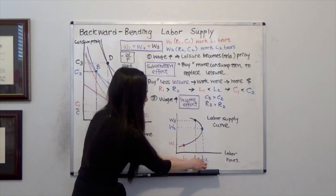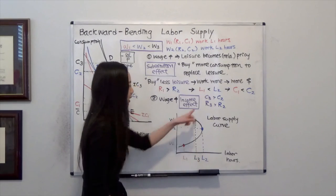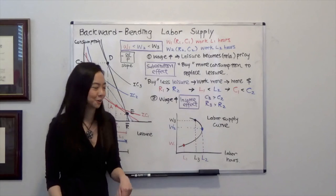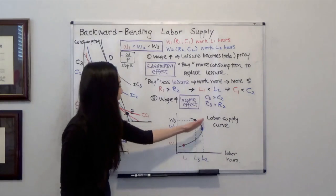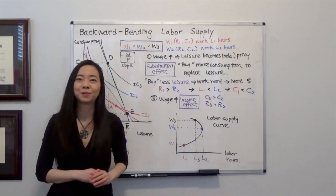So, you can see that L3 is less than L2. Why? Because R3 is bigger than R2. So, that's the reason why we have a backward-bending labor supply curve.